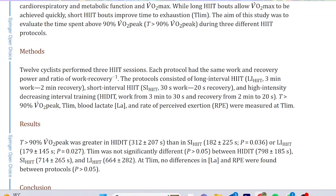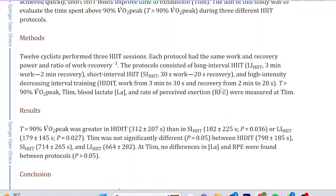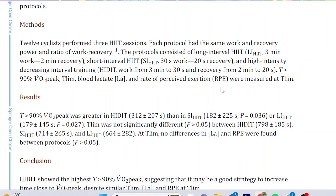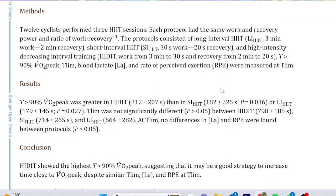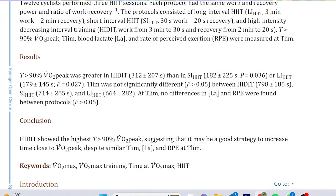This is the abstract. The basic idea is 12 cyclists performed three high intensity interval training sessions. One is the classic 3-minute on, 2-minute off, one is 30-20s, and then this other one is decreasing interval training. The results show time over 90% VO2 max was greater in this new interval session by actually a lot.